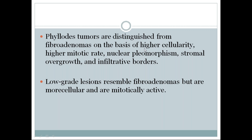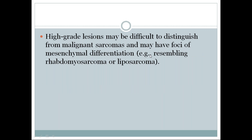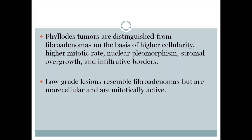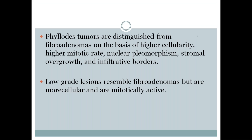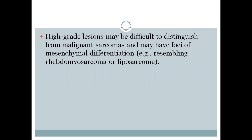The distinguishing features of phyllodes tumor from fibroadenoma are: higher cellularity, higher mitotic rate, nuclear pleomorphism, stromal overgrowth, and infiltrative borders. Low-grade lesions resemble fibroadenomas but are more cellular and mitotically active. High-grade lesions may be difficult to distinguish from malignant sarcomas and may have foci of mesenchymal differentiation, resembling rhabdomyosarcoma or liposarcoma.